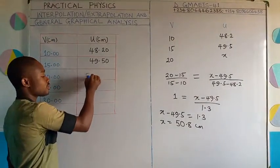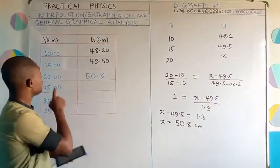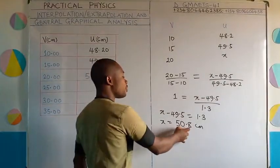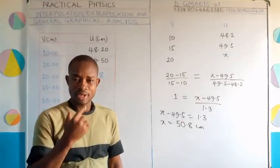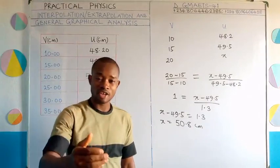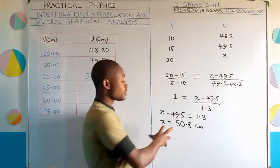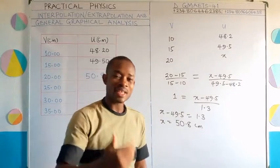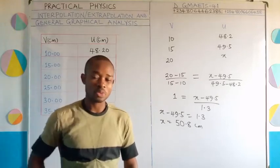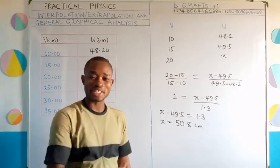I fix 50.8 into the table. Comparing this with the actual experimental value when v was 20 cm — the experiment gave 51.10 cm. Comparing 51.10 to 50.8, if you approximate to the nearest whole number, both give approximately 51 cm. So even by extrapolation, the value is very close to what the experiment gave. In fact, the calculated estimate may be more accurate because in a live experiment there are chances of systematic or random error.